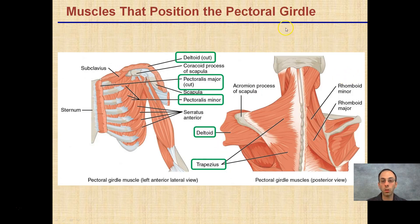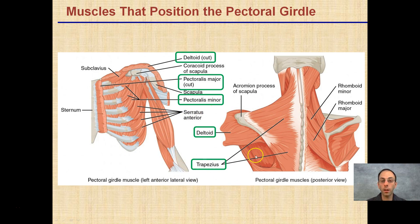Muscles that position the pectoral girdle — we're looking at our scapula here, we have our sternum, and some of the muscles that attach to that. Deltoids and trapezius come back again, and here you're able to appreciate their orientation in the body. Where it says cut, that's the deltoid that's been cut in this region to expose some of the other attachment points and bones. Please realize that the deltoid does cover this entire region.